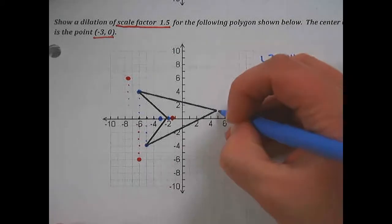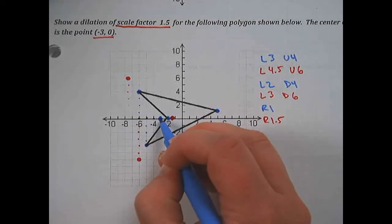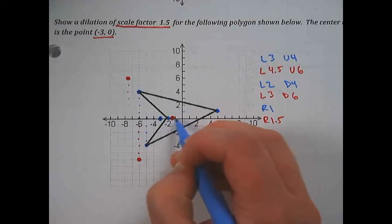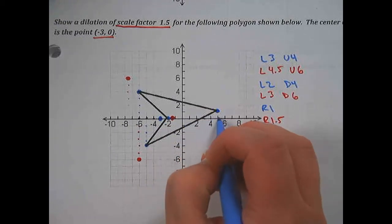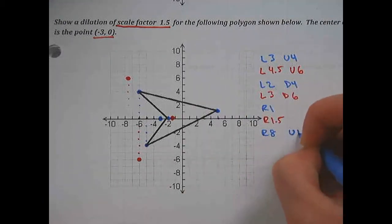Then my last one, all the way up here. From my center of dilation, we have to go right 1, 2, 3, 4, 5, 6, 7, 8, and up 1 to get there.